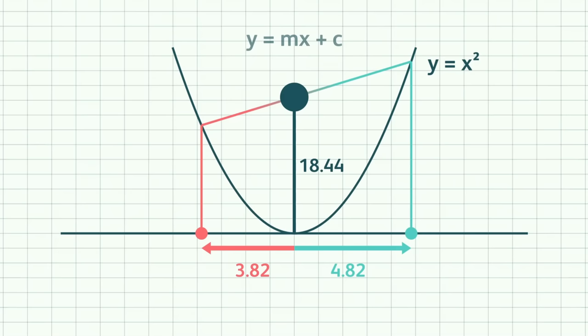So, why does this work? Here's a simple proof. A general equation of a line is y equals mx plus c. Given two points on the line, we can calculate both m, the slope, and c, the constant.